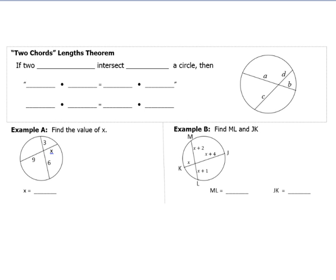We're going to be looking at three different scenarios with the different lines. The different segments we've talked about with circles are chords, tangents, and secants. So we're going to see how, when those things interact with each other, we can solve some problems with them.